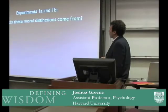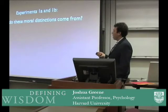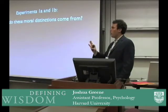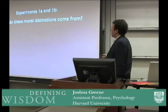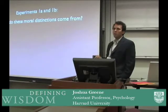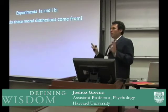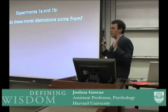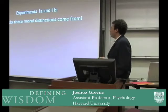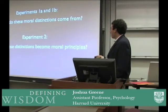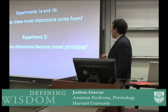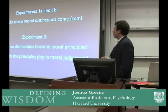Here's the basic research plan. Experiments 1A and 1B — originally one experiment, since divided into two — address the question: where do these moral distinctions come from cognitively? What is the psychological basis for drawing these moral distinctions? Experiment 2 asks how these distinctions become moral principles and what role these principles play in moral judgment.